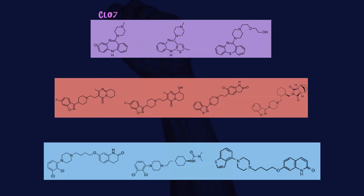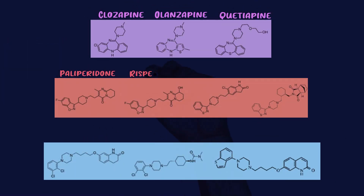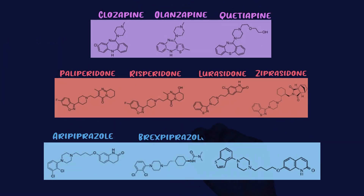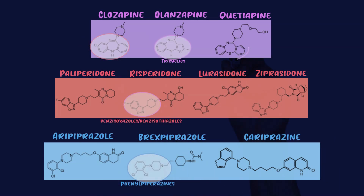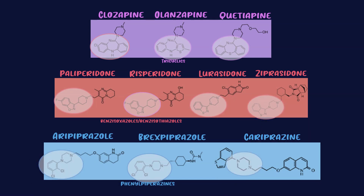Now let's take a quick look at the chemical structures of these drugs. I know a lot of people get intimidated by chemical structures, but we're really just looking at the shapes, nothing too fancy. The reason I'm showing you the chemical structures is that we can see there's a reason these drugs share certain properties — it's a result of their chemical structure, and if they share chemical similarities, they'll have similar receptor binding properties.